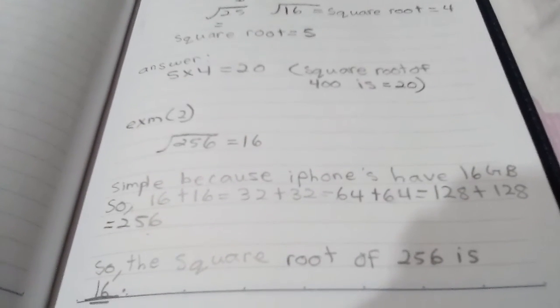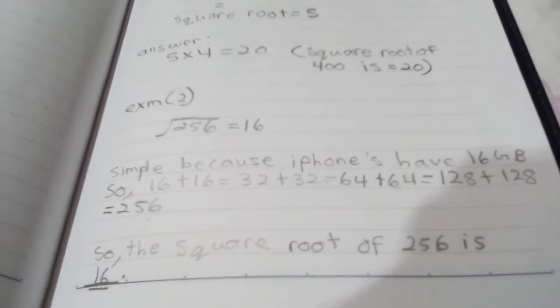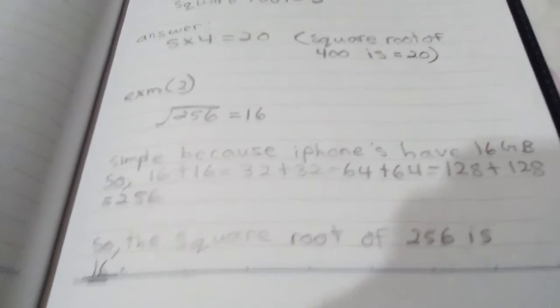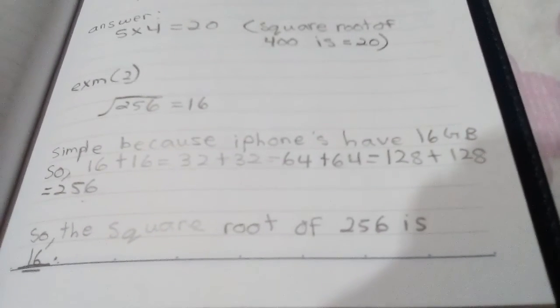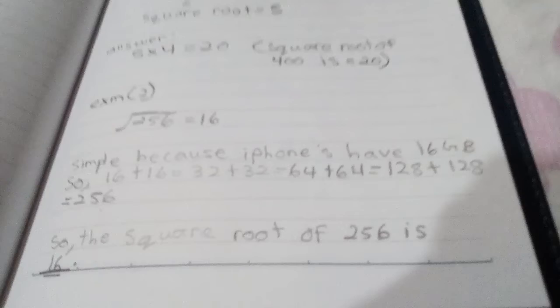16 plus 16 equals 32 and you can see that in the iPhones. 32 plus 32 equals 64. You can see that 64 gigabyte is in the iPhone. 128 plus 128 equals 256. So the square root of 256 is 16.